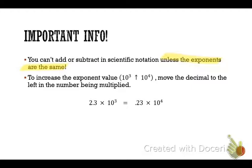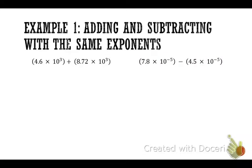So there's a rule. If I need to bump my exponent value up, meaning maybe I have 10³ and then over here I have 10⁴ and I want to increase this one, if I want to increase it, I will move my decimal to the left. So increase, I move my decimal to the left in the number being multiplied. That's my rule.